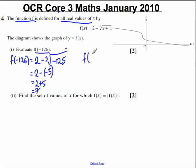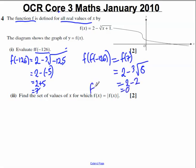Therefore, f of f of minus 126 must equal f of 7. And we just need to substitute 7 into this equation here. 2 subtract the cube root of 7 plus 1, which is 8. The cube root of 8 is 2, so we get 2 subtract 2, which is simply 0. Therefore, f of f of minus 126 is equal to 0.